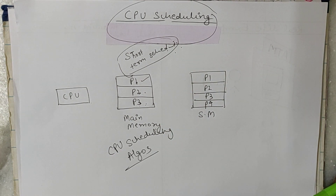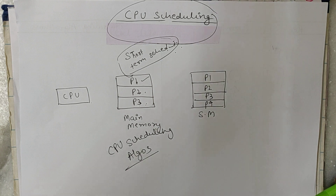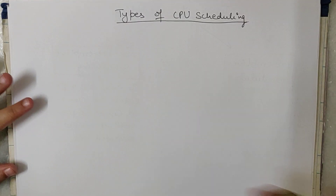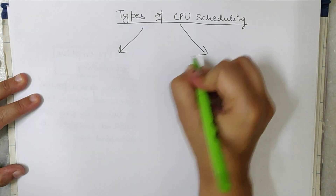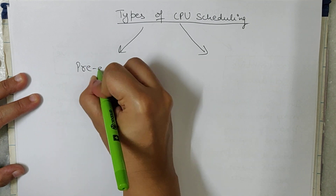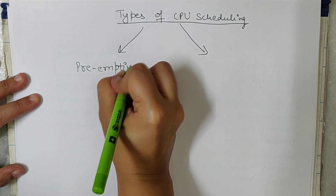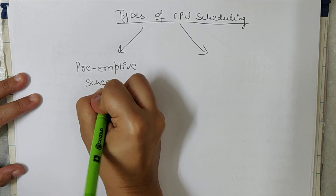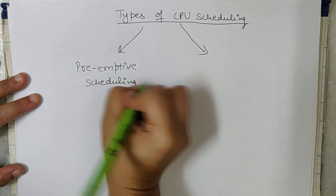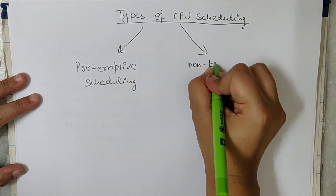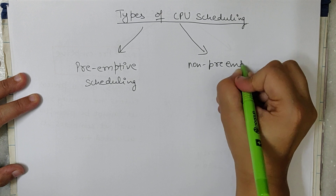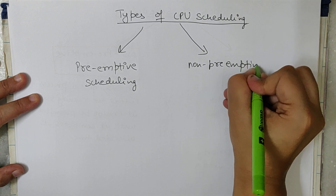Before discussing the algorithms, let me explain the two types of CPU scheduling. The first type is preemptive scheduling, and the other is non-preemptive scheduling.